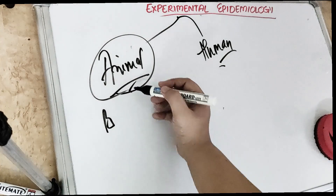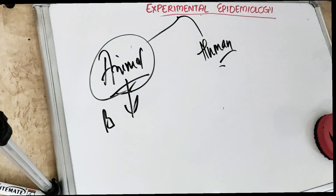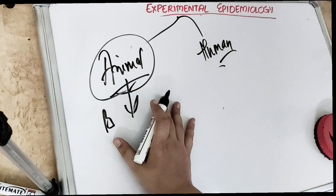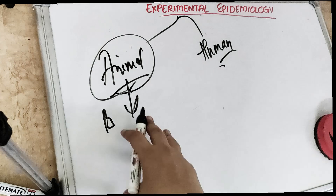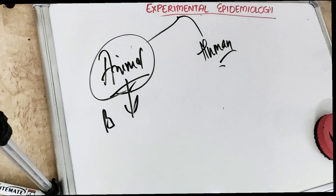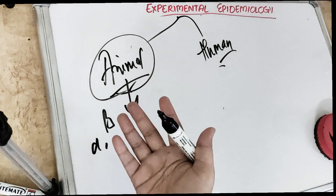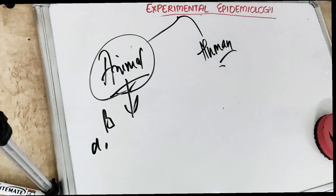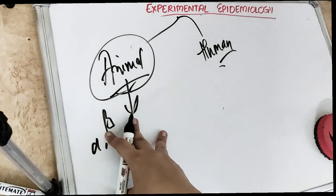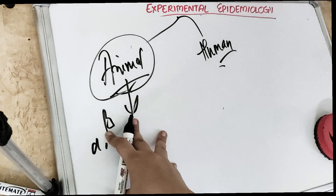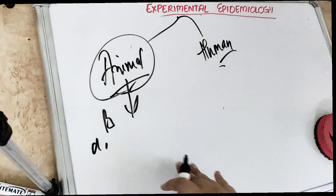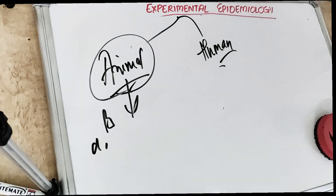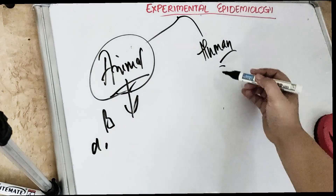However, there are some limitations to animal studies. Not all human diseases can be reproduced in animals — and only if a disease can be reproduced can you make the vaccine. Also, not all conclusions from animal studies can be applicable to human beings. That is why we then move to human trials.